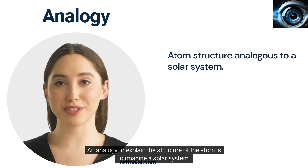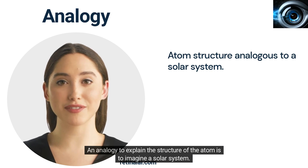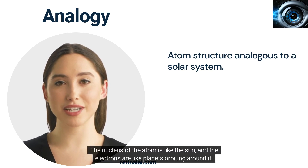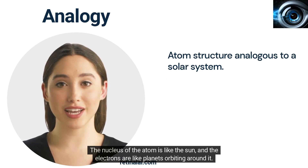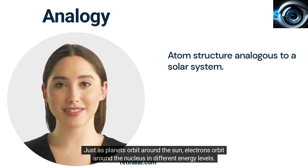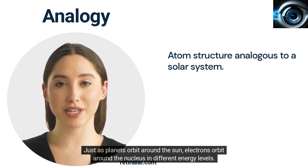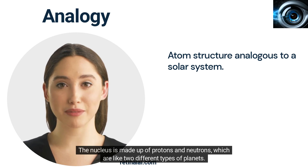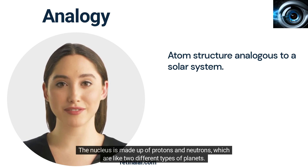An analogy to explain the structure of the atom is to imagine a solar system. The nucleus of the atom is like the sun and the electrons are like planets orbiting around it. Just as planets orbit around the sun, electrons orbit around the nucleus in different energy levels. The nucleus is made up of protons and neutrons, which are like two different types of planets.